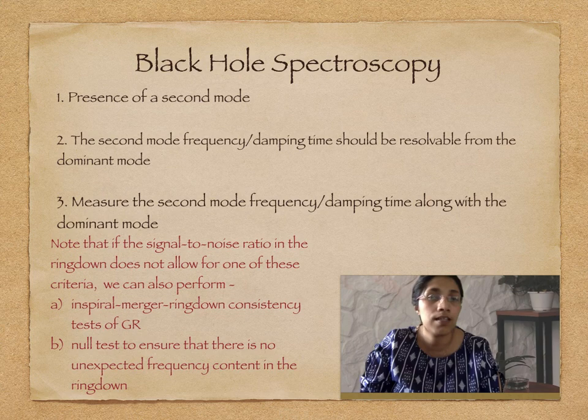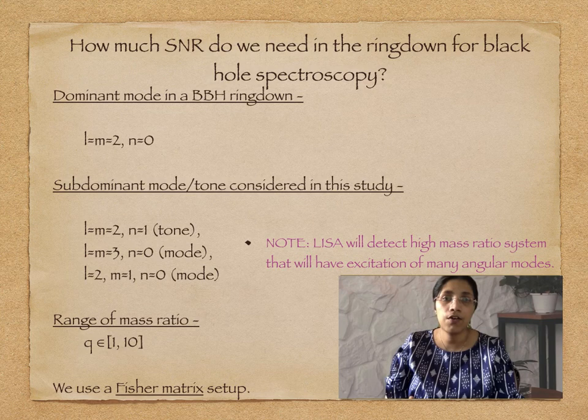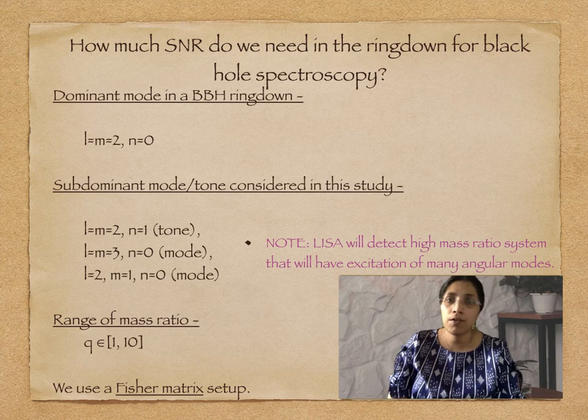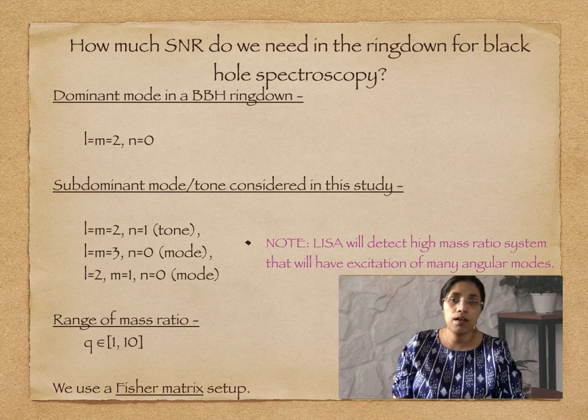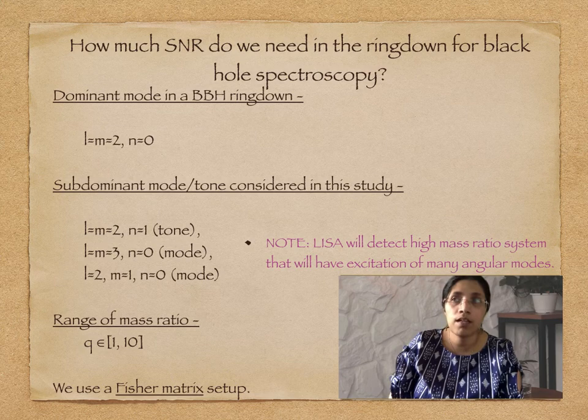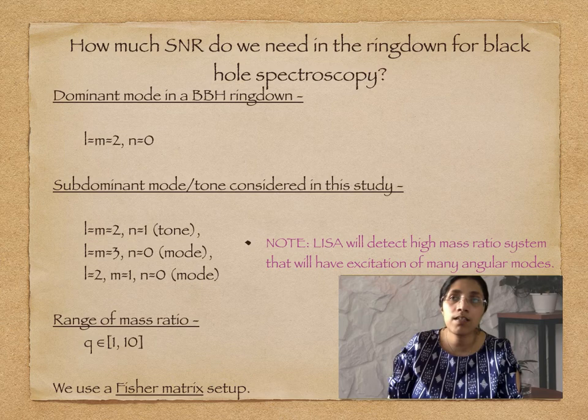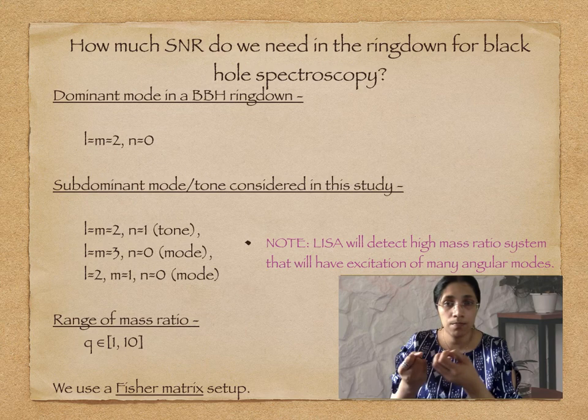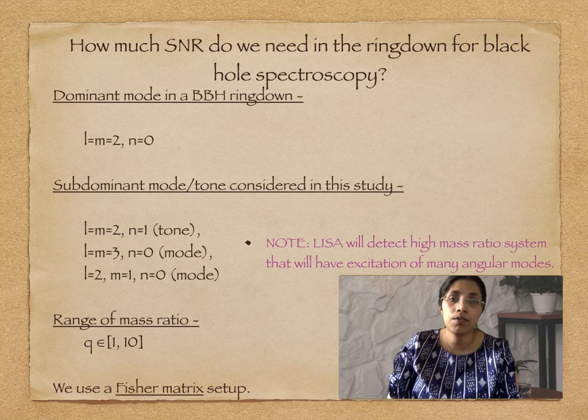We consider the question of what is the minimum SNR required in the ringdown to perform black hole spectroscopy as defined. During a binary black hole ringdown, the L=M=2 mode is the dominant mode because of the symmetry during the merger phase. In our study, we consider two subdominant angular modes—L=2, M=1, and L=M=3—which are the two loudest subdominant angular modes for non-spinning initial binaries. We also consider one overtone: L=M=2, N=1, one overtone of the dominant mode.